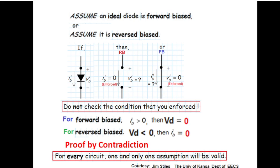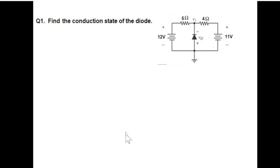I got lots of help from Jim Stiles from University of Kansas, Department of EECS. You can watch his notes. Very helpful, thanks Jim. Okay, let's do the first question: find the conduction state of the diode. So this is the circuit. You have a voltage source here, resistance, voltage source, resistance. You have to find whether the diode is forward biased or reverse biased.